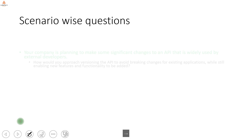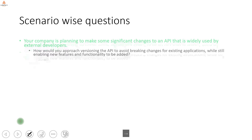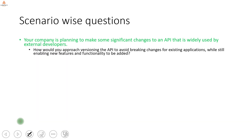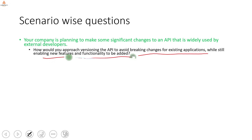Scenario question: a company is planning to make significant changes to an API that is widely used by external developers. How would you approach versioning to avoid breaking changes for existing applications while still enabling new features? You choose one of the API versioning strategies, implement the new changes into the new API version, and leave no changes in the existing one.